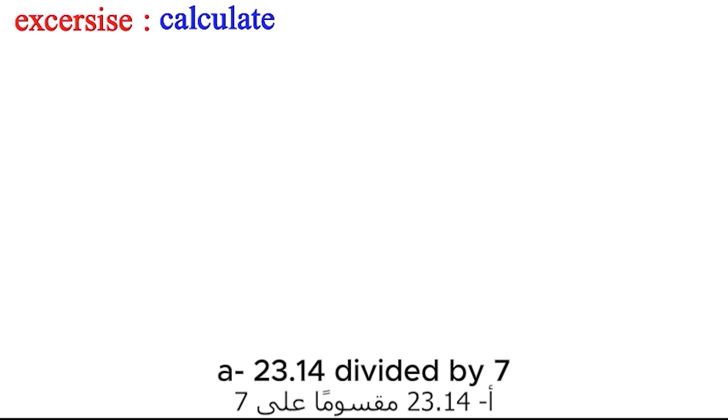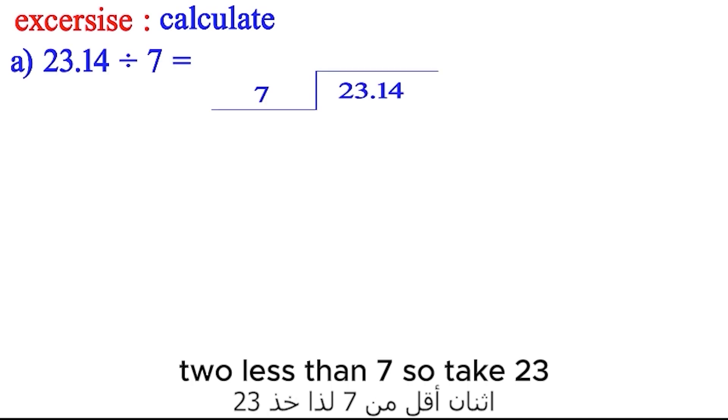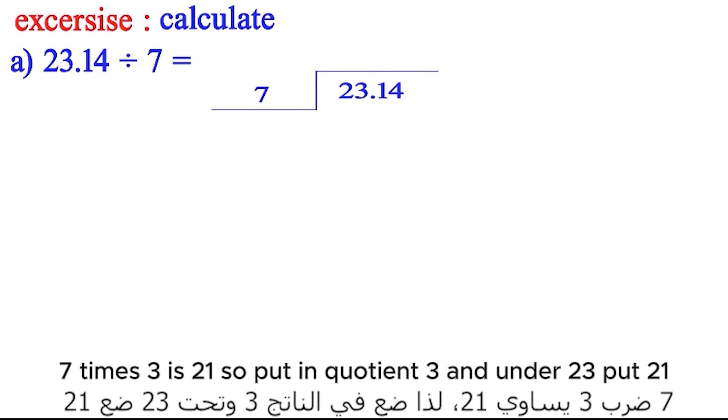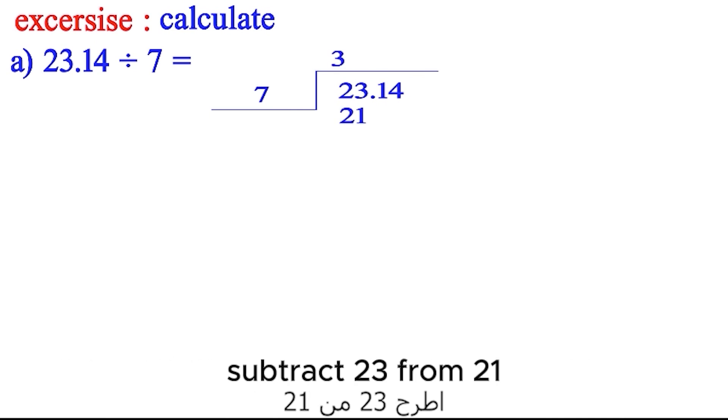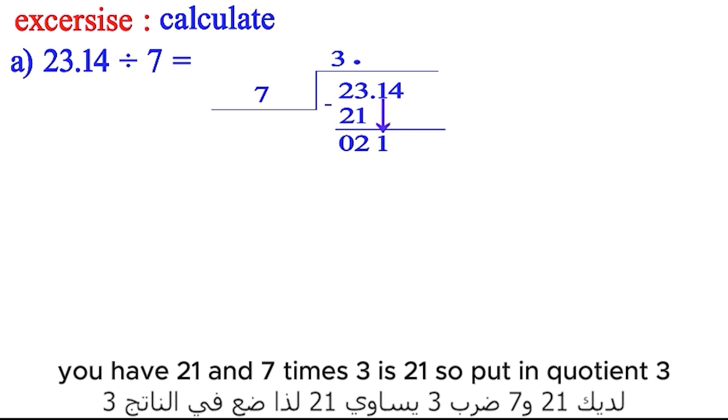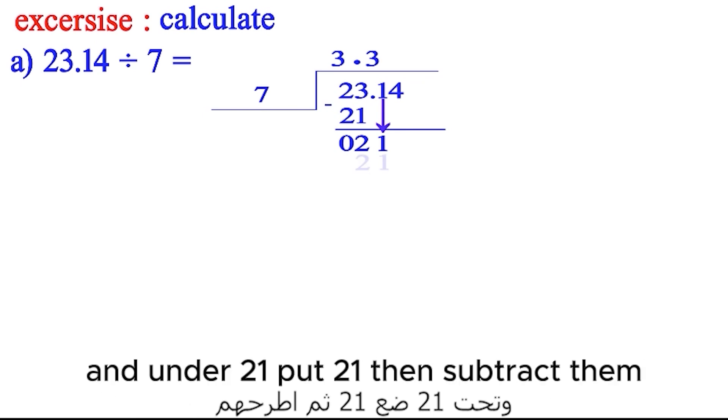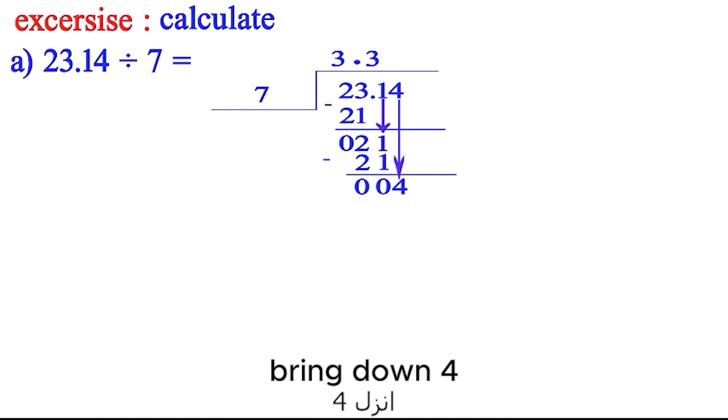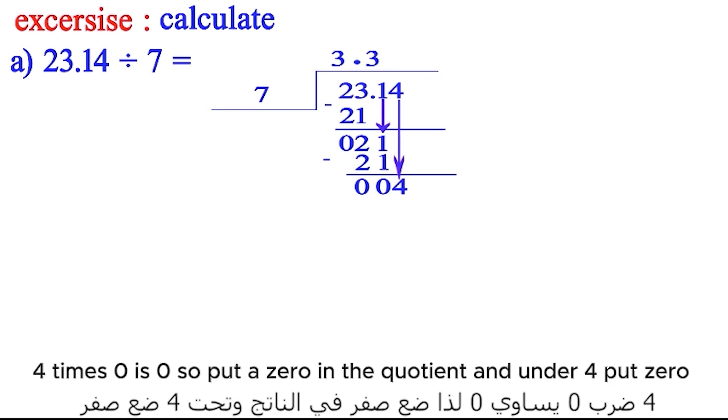Exercise: Calculate. A) 23.14 divided by 7. 2 is less than 7, so take 23. 7 times 3 is 21, so put in the quotient 3 and under 23 put 21. Subtract 23 from 21. The digits before the dot are over, so put dot in the quotient. Bring down 1. You have 21 and 7 times 3 is 21, so put in the quotient 3 and under 21 put 21, then subtract them. Bring down 4. 4 times 0 is 0, so put a 0 in the quotient and under 4 put 0. Subtract them.